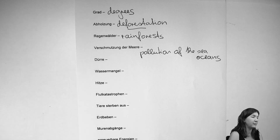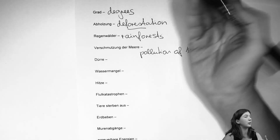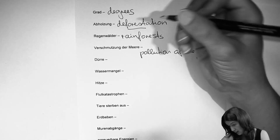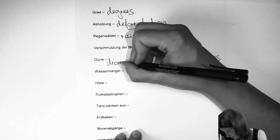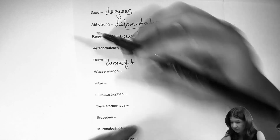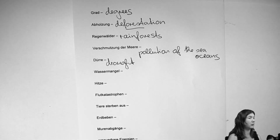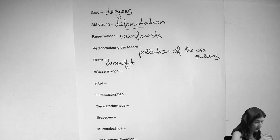'Dürre' — if you do not have any water, if it's really hot: it's a drought. So there's no water, no precipitation — no rain, no snow, nothing like that.